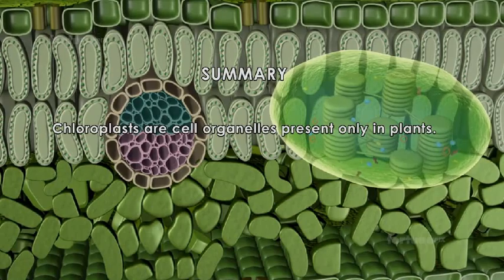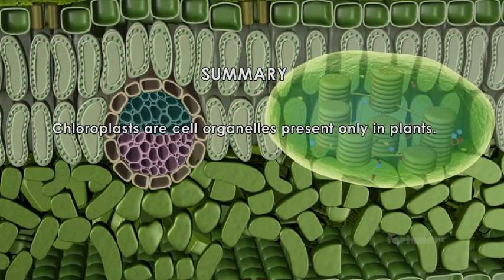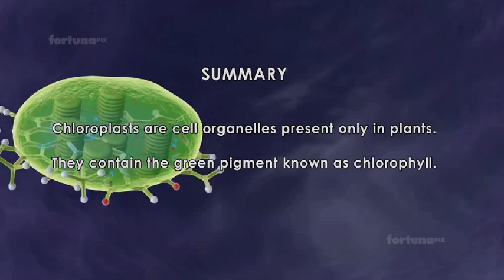Chloroplasts are cell organelles present only in plants. They contain the green pigment known as chlorophyll.